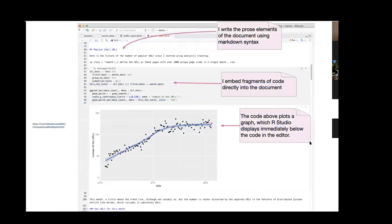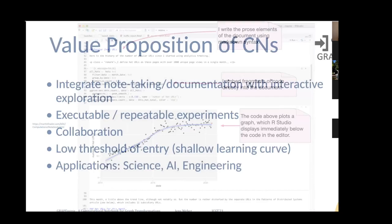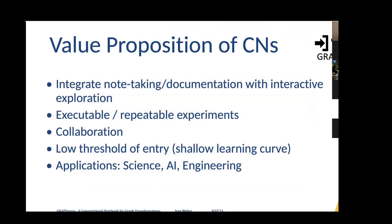Here is an example screenshot from Martin Fowler's blog about RStudio, where it embeds a little bit of some comments — a prose area in markdown syntax, some code fragment, and a visualization part that is interactively updated when you update your code, and then continues with some prose.